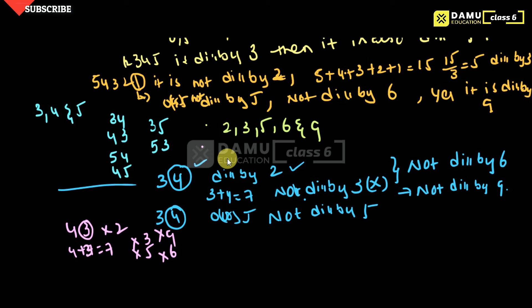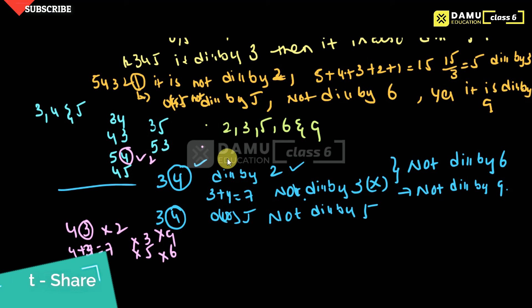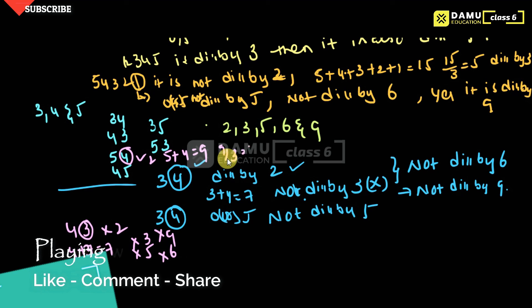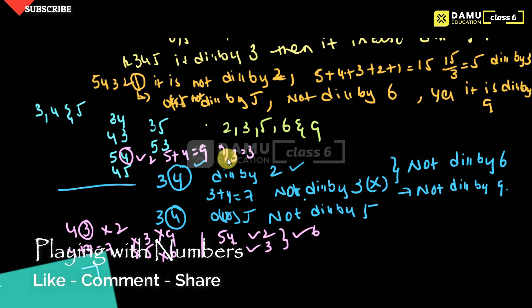Now check 54. Units digit is 4, so it is divisible by 2. Sum of digits: 5+4=9, and 9 is divisible by 3, so 54 is divisible by 3. Since it is divisible by both 2 and 3, it is also divisible by 6. Units digit is 4, not 0 or 5, so not divisible by 5. And since it is divisible by 3, it is also divisible by 9.